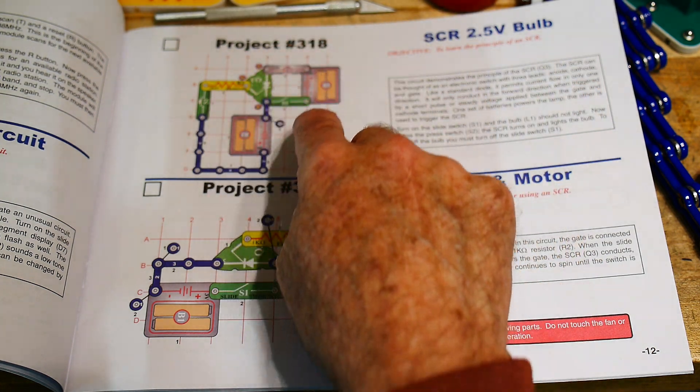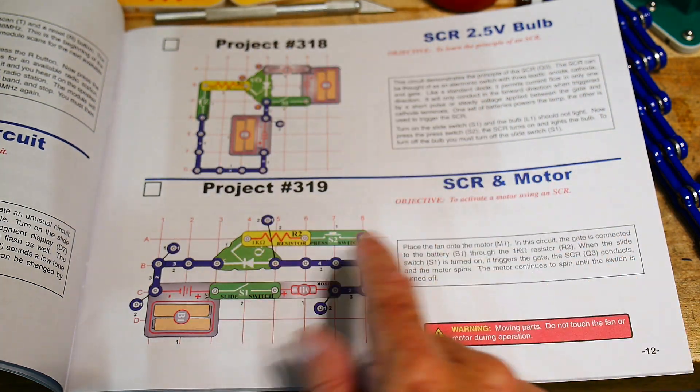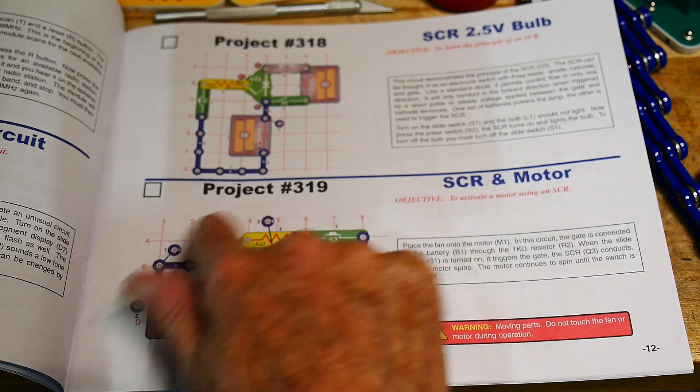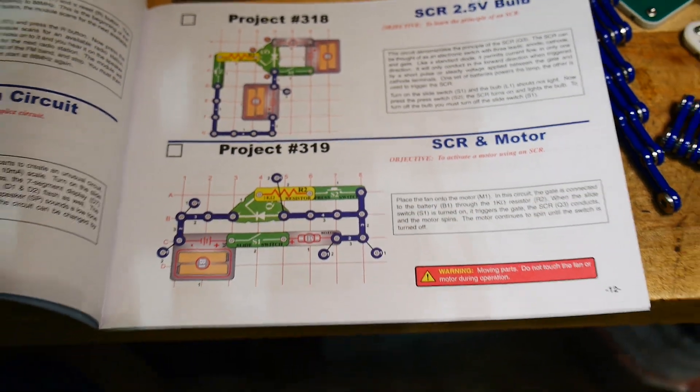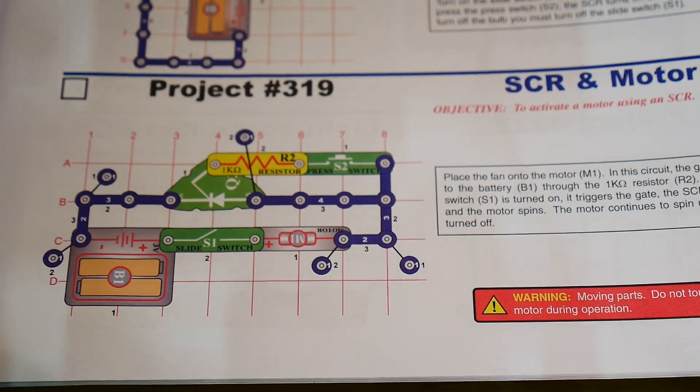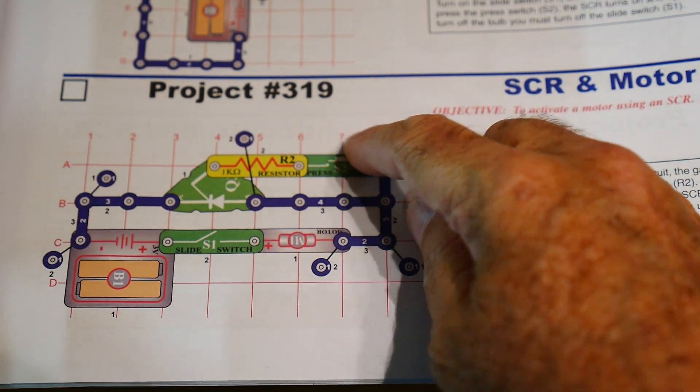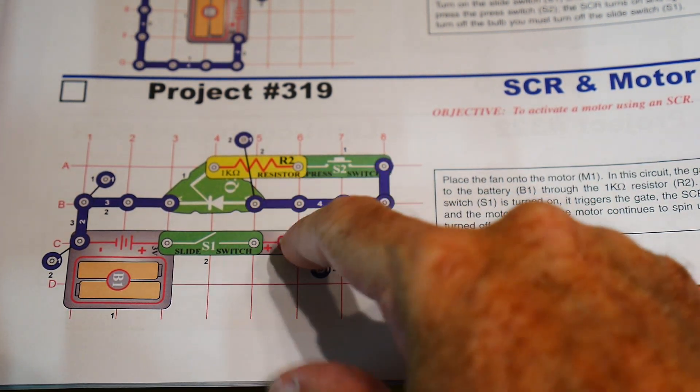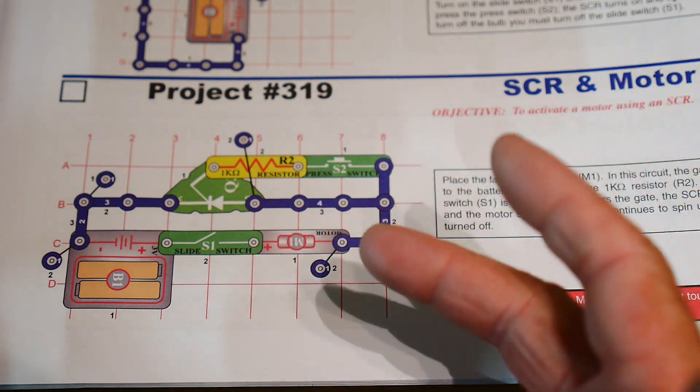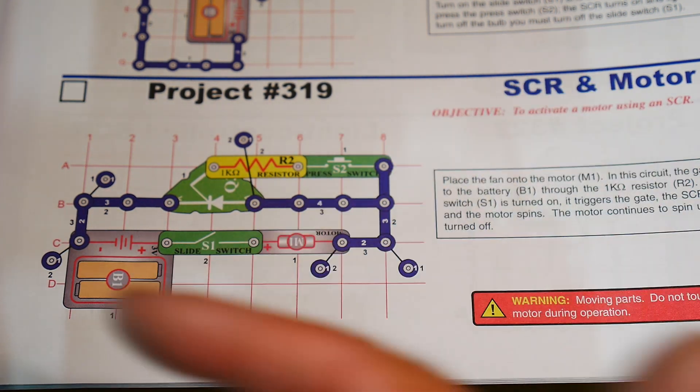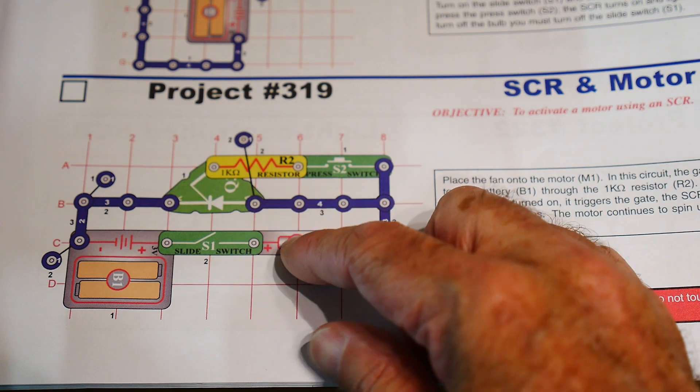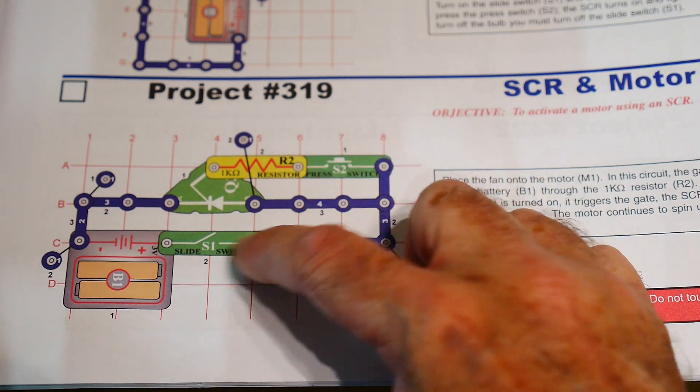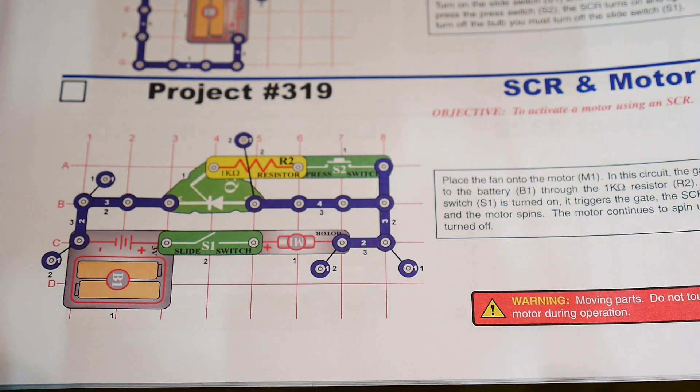And there's two SCR circuits here. One controls a light bulb and one controls a motor. And this is the project that I decided to build, number 319. And instead of the motor, I had a motor in there, but it was difficult to film. It was difficult for you to see it rotate. So I replaced the motor with an LED so you can see if the circuit is on or not.